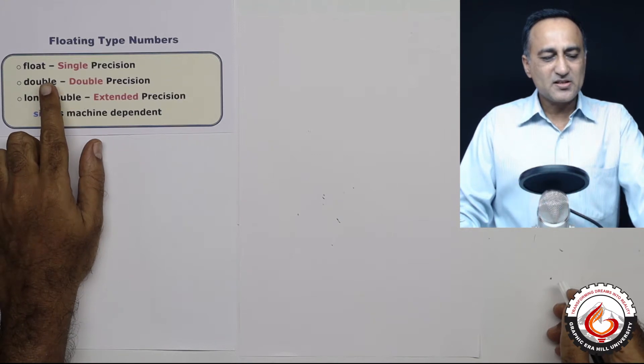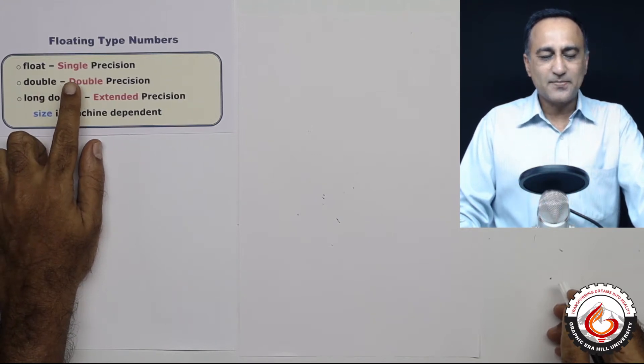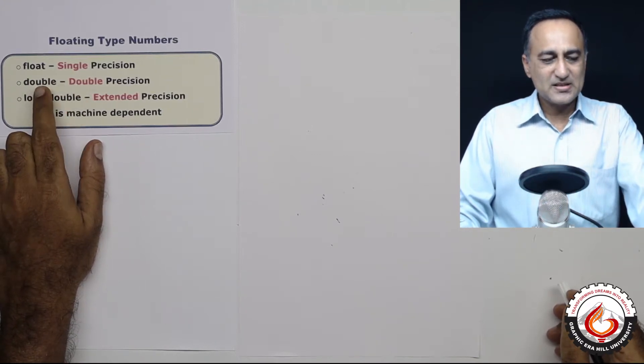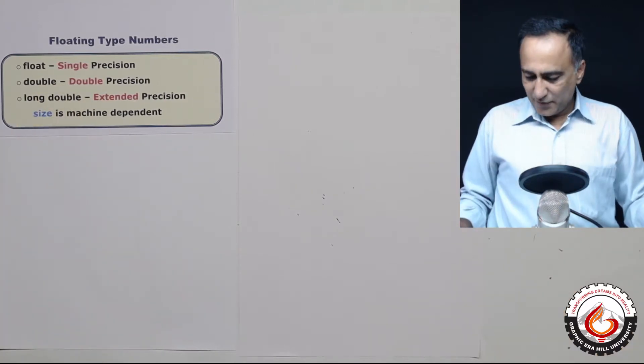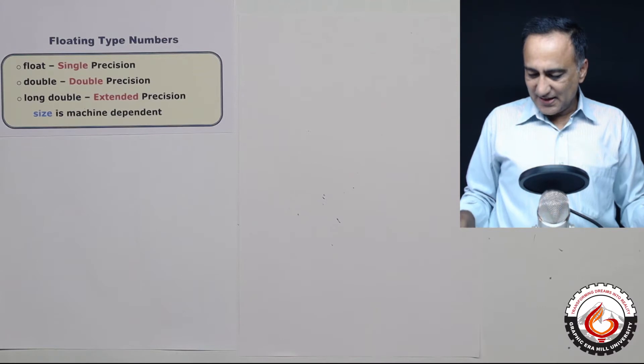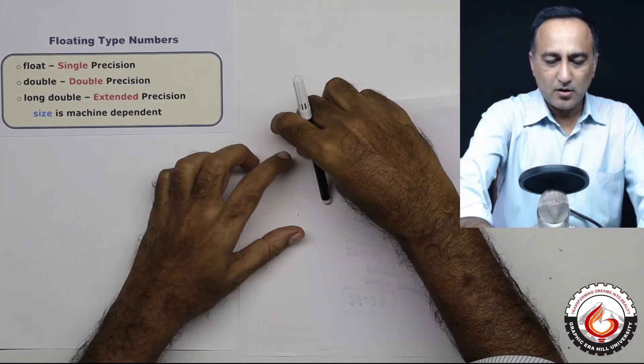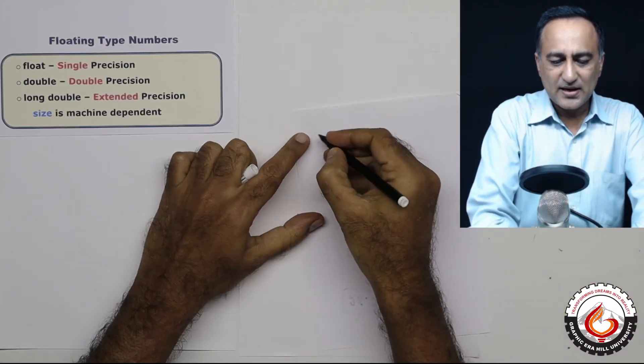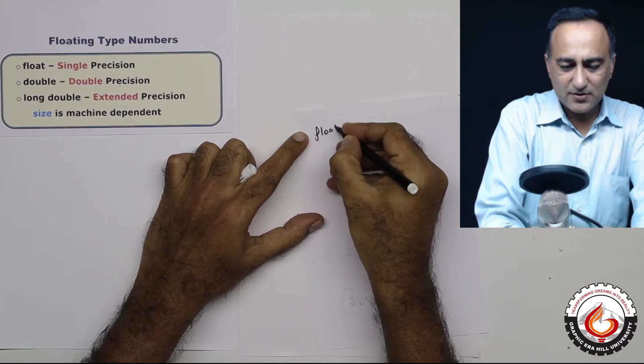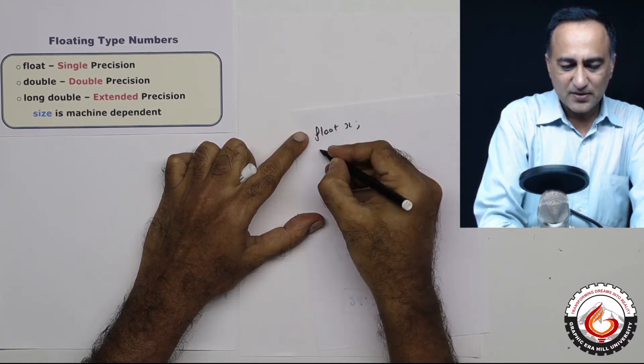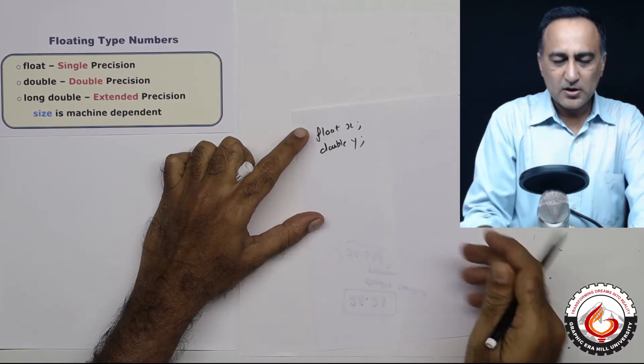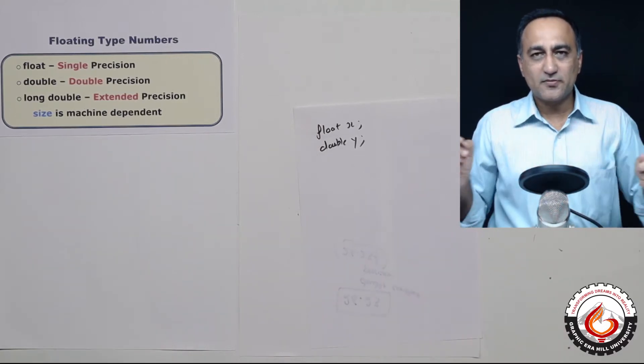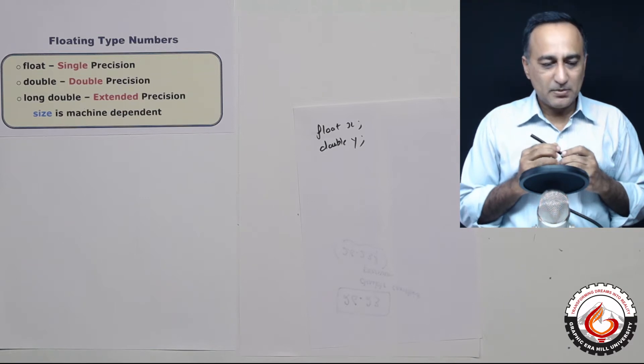The first type is known as float or single precision. The second type is double or double precision. Now if I have to declare variables like float and double, all that I would need to do is I will say float x and I will say double y. So this will declare two variables of the type float and double respectively.